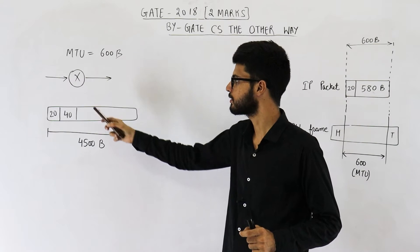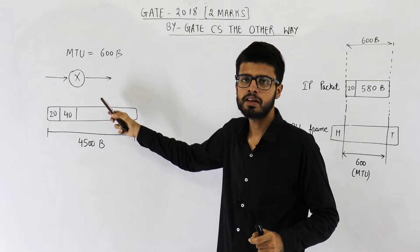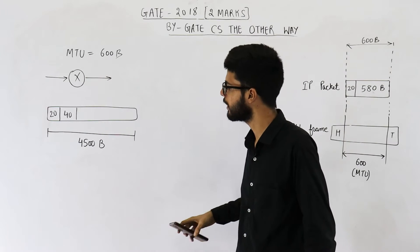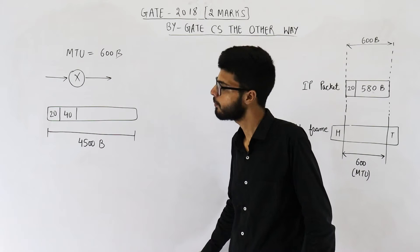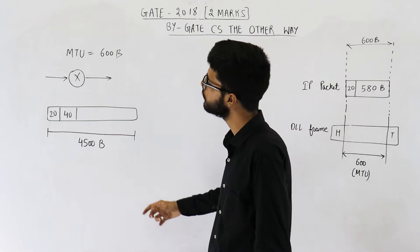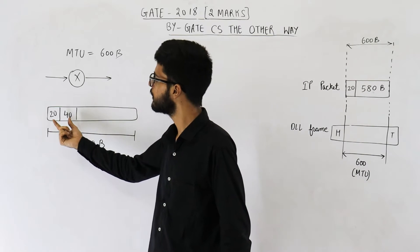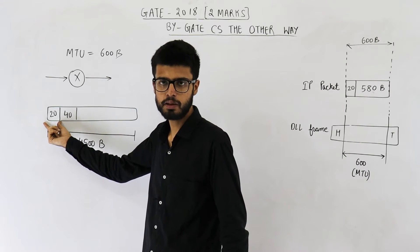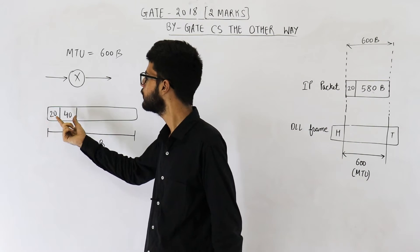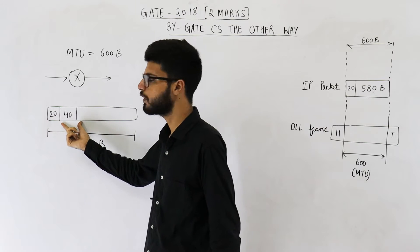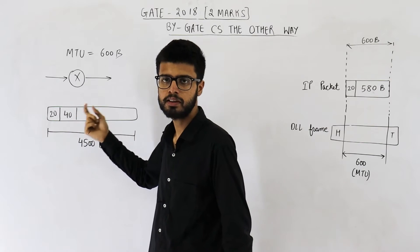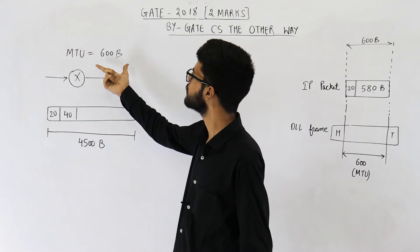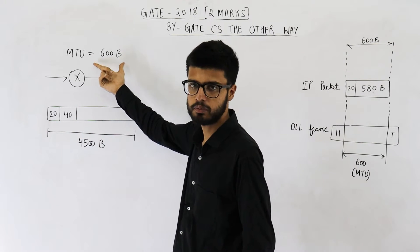So they are saying some router receives an IP packet that is of 4500 bytes. Out of these 4500 bytes, the first 20 bytes is the IPv4 header, then you have a 40-byte TCP header. MTU is given as 600 bytes.